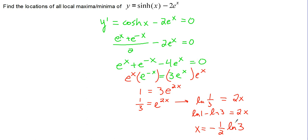So now we'll need to check if this is a max or a min, or neither at this point. So for this, we'll make a sign chart, putting on negative 1 half ln 3. We'll have to test something to the left and something to the right of this value.